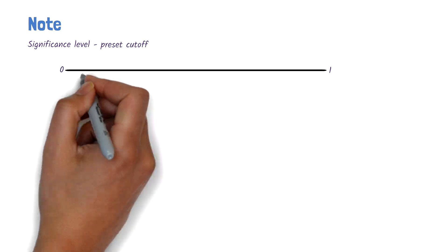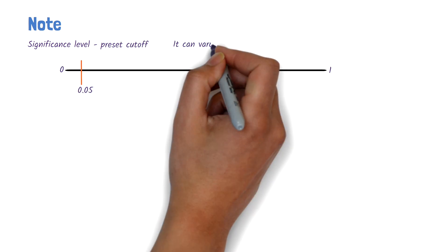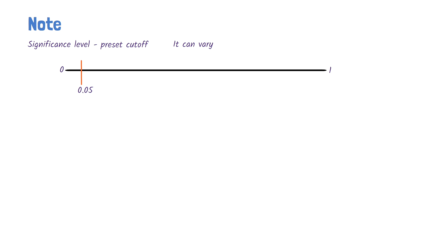Finally, a few things to note. The significance level is a preset cut-off that defines how much chance is acceptable. It can vary. For example, if we decide on a 0.01 significance level, it means that we're only willing to accept a 1% probability that the result was due to chance. On the other hand, a 0.1 level is more lenient and means that we're willing to accept a 10% probability that it was due to chance.